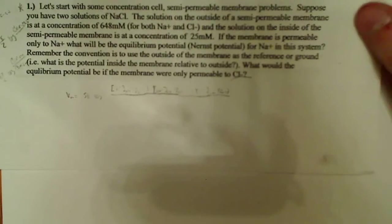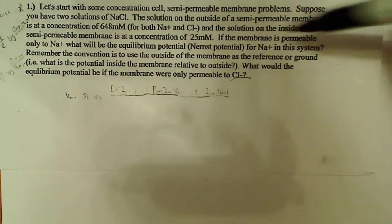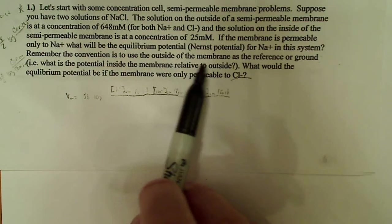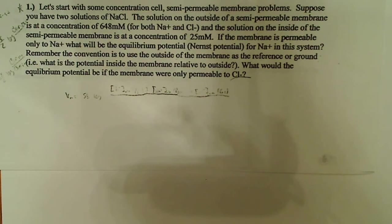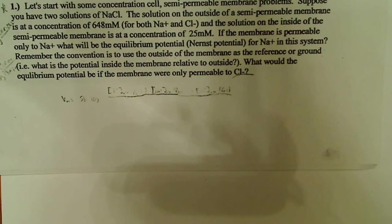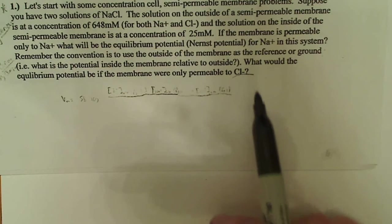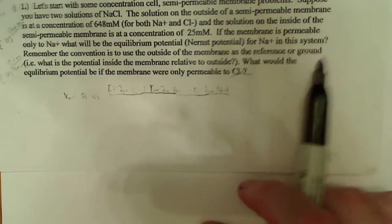Now, there's a part B to the question. So, let's take a look at that. And it says, if the membrane is permeable to only Na plus, okay, where am I here? Okay, remember the convention is to use the outside of the membrane as a reference or ground. So, what would the equilibrium potential be if the membrane were only permeable to Cl minus? Okay, so if it's only permeable to Cl minus, they're asking us to do essentially the same thing we just did with Na, only now we're going to use only chloride.